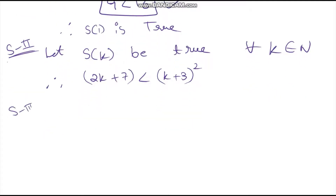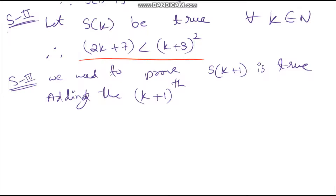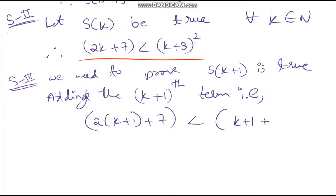Now in step 3, we need to prove the k plus 1th term. Since this is an inequality and there are no additive terms, the k plus 1th statement will be: 2 into (k plus 1) plus 7 is less than (k plus 1 plus 3) whole square. So we need to prove that S of k plus 1 is true.